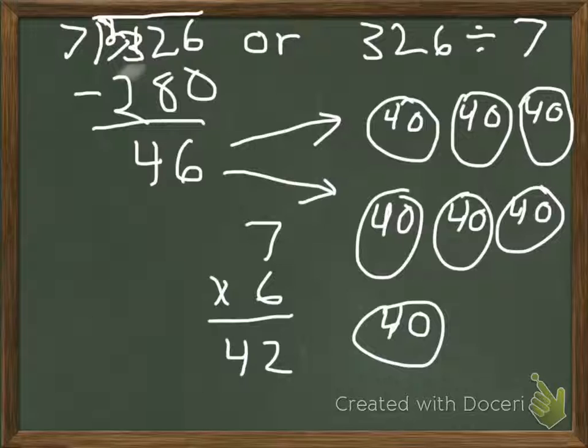7 times 6 gets me 42, and 7 times 7 is 49, so I can't use that. I must stay below the number that I'm breaking apart. So 42 is a safe bet. Well, to get 42, I times 7 by 6, so let's put that 6 in every circle.